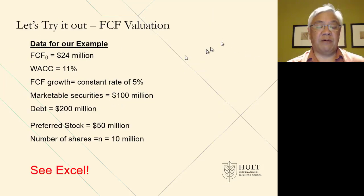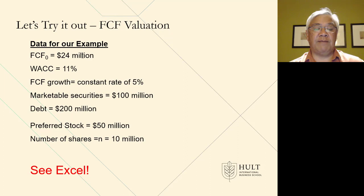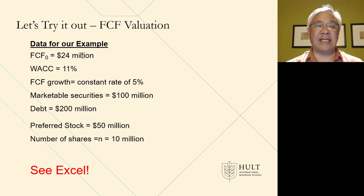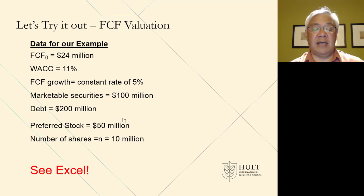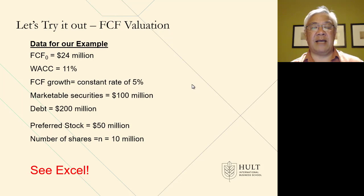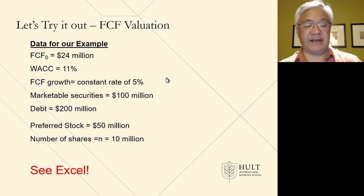Here's our example. We have data: free cash flow for T0 is $24 million, WACC is 11%, and free cash flow growth rate is constant — the simplifying assumption of 5%. Marketable securities are $100 million, debt of $200 million, preferred stock of $50 million, and shares of 10 million. This might seem like a random set of things, but when we go through the Excel example, you'll see how the pieces fit.